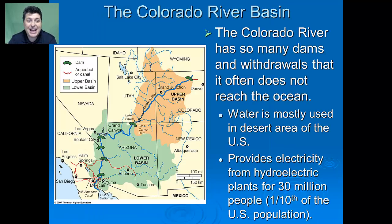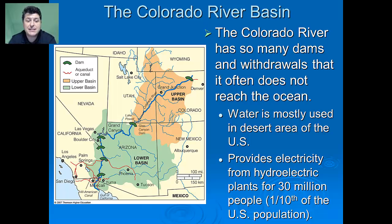The Colorado River has so many dams and withdrawals that it often doesn't even reach the ocean. The water withdrawn from the Colorado River Basin is mostly used in desert areas of the United States. It also provides electricity from hydroelectric plants for about 30 million people — roughly a tenth of the U.S. population. But with the flow so disrupted, aquatic ecosystems have been severely damaged along with migrating fish and the organisms that rely on them.